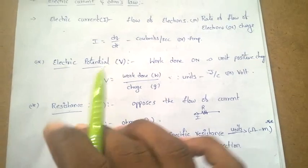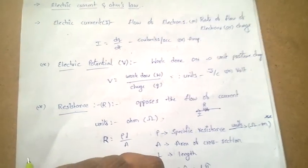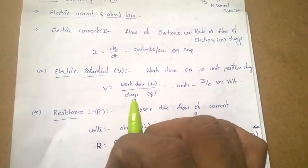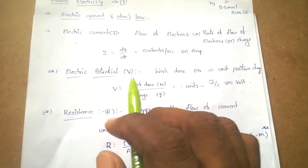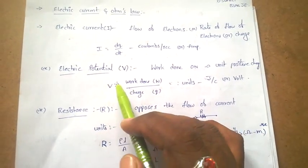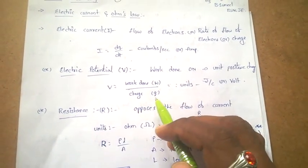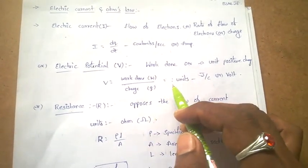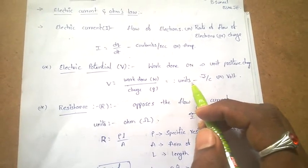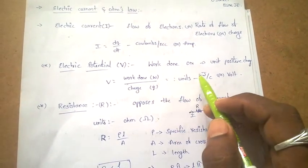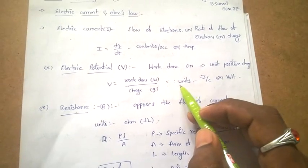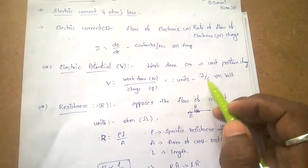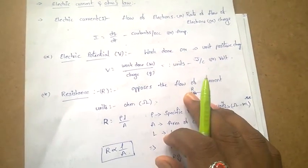What is electric potential? It is nothing but work done on a unit positive charge. V equal to W by Q, where W is work done and Q is charge. The units of electrical potential: for work, units are joules; for charge, units are coulombs. So the total units for potential is joules per coulomb, or nothing but volts.